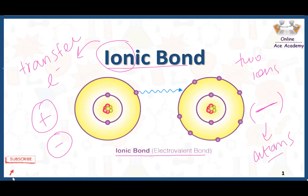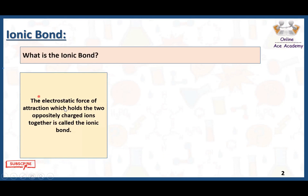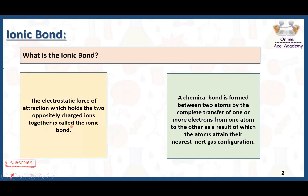The electrostatic force of attraction which holds the two oppositely charged ions together is called the ionic bond. The force of attraction that holds the two oppositely charged ions — positive and negative — ultimately forms a bond, and that bond is called an ionic bond.